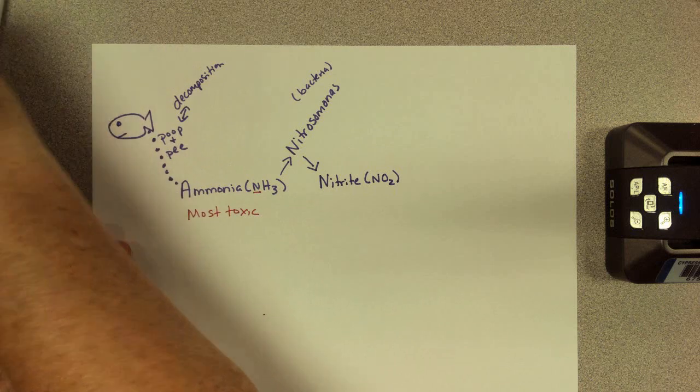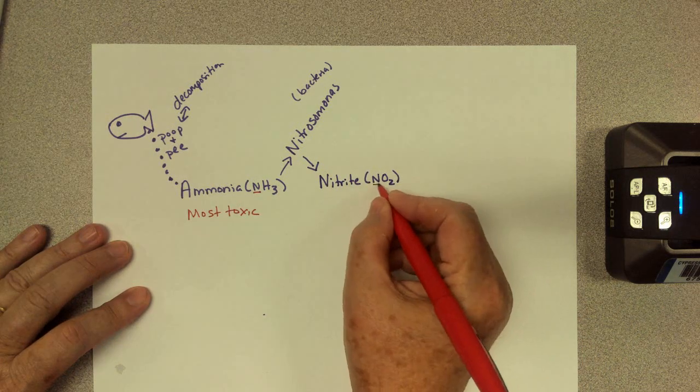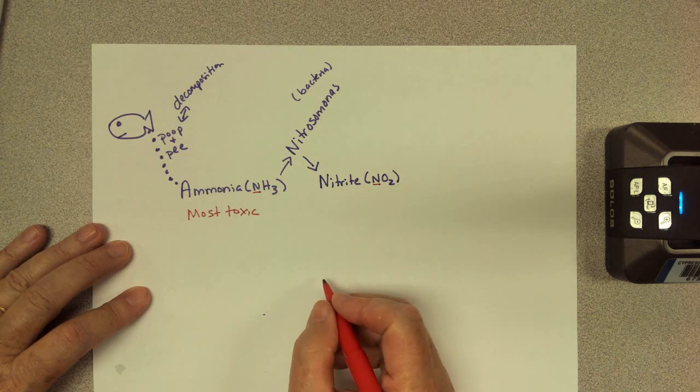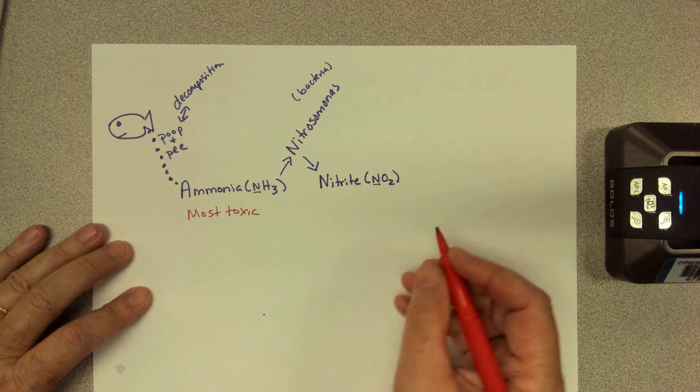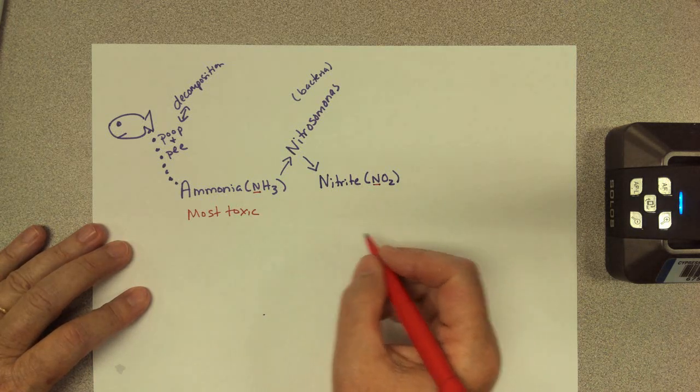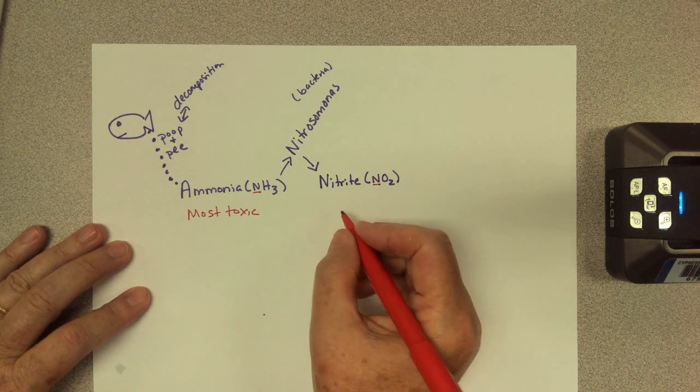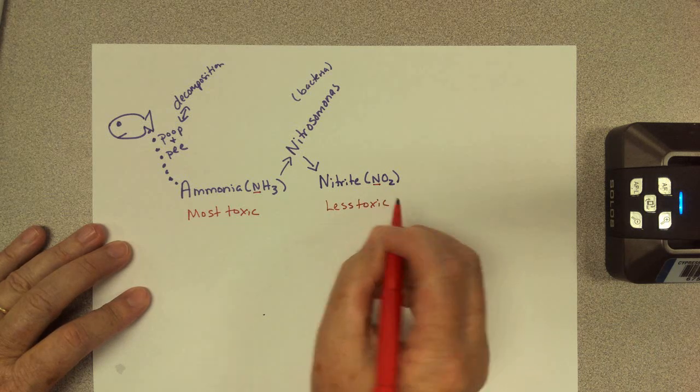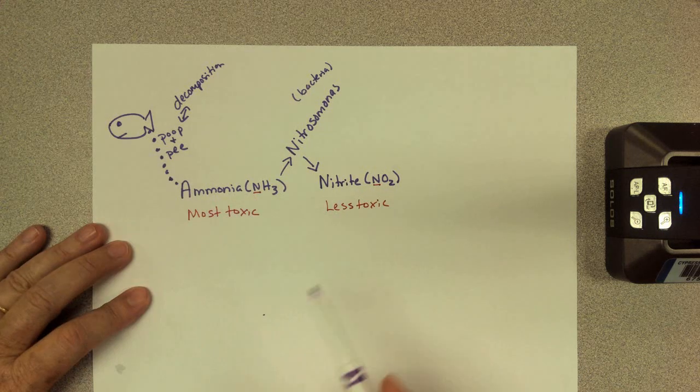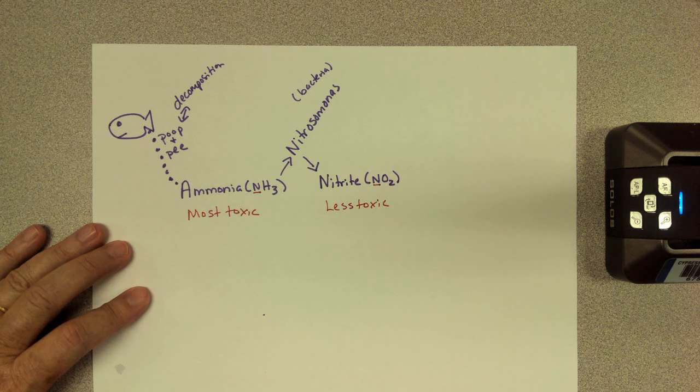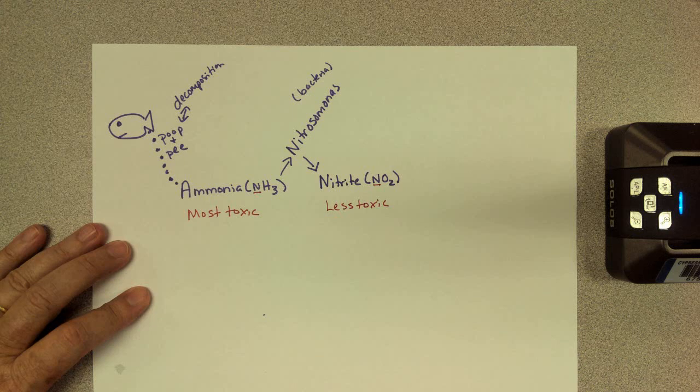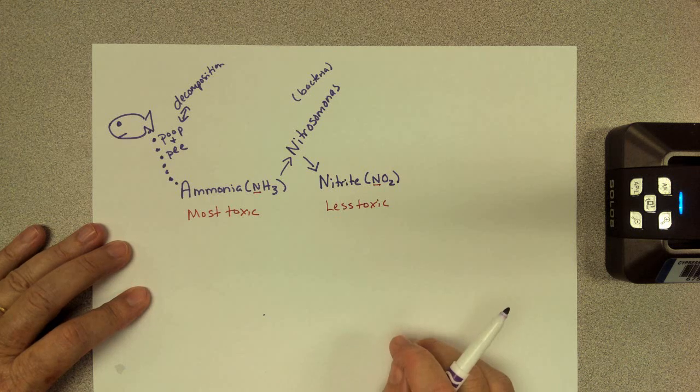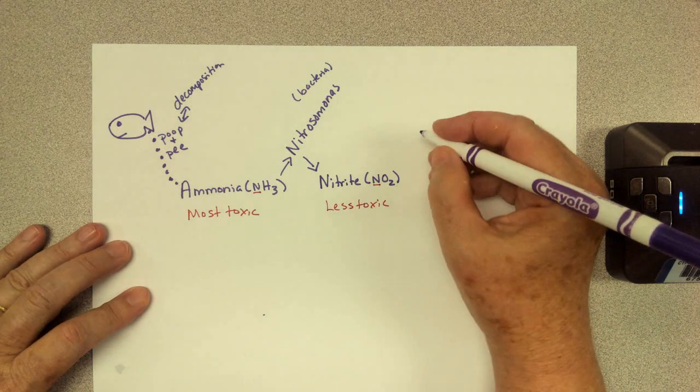Now nitrite, like ammonia, still has the nitrogen in it, right? So when I say nitrogen compound, I'm talking about both of them. But nitrite is still toxic, but it's less toxic than ammonia. So we're going to put less toxic here. So we really don't want nitrite in the tank either because it is still nasty. It will kill the animals, not as quickly as ammonia, but it still kills them.